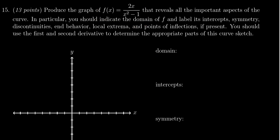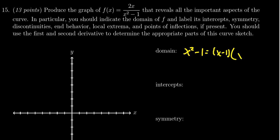Let's look at the first one about domain. As this is a rational function, the only problem with the domain is what makes the denominator go to 0. So we need to solve x² - 1 = 0. There are a couple ways to solve this quadratic equation — I'm going to do it by factoring. It's a difference of squares, so we get (x - 1)(x + 1) = 0. We see the domain is going to be everything except ±1.